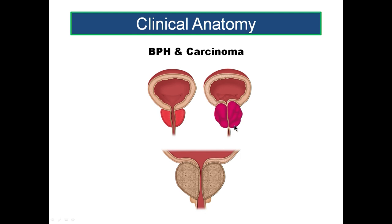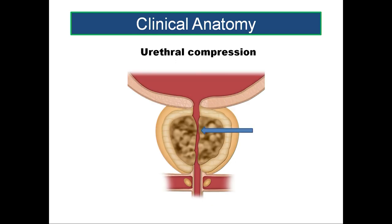The surrounding peripheral zone gets compressed and forms a capsule surrounding this irregular mass. Since it is not the original capsule it is called a surgical pseudocapsule, which can be used as a guide during enucleation of the prostate. Enlargement of the prostate due to any cause causes urethral compression — the urethra is a membranous structure within the prostate — and it can be compressed by BPH or carcinoma.